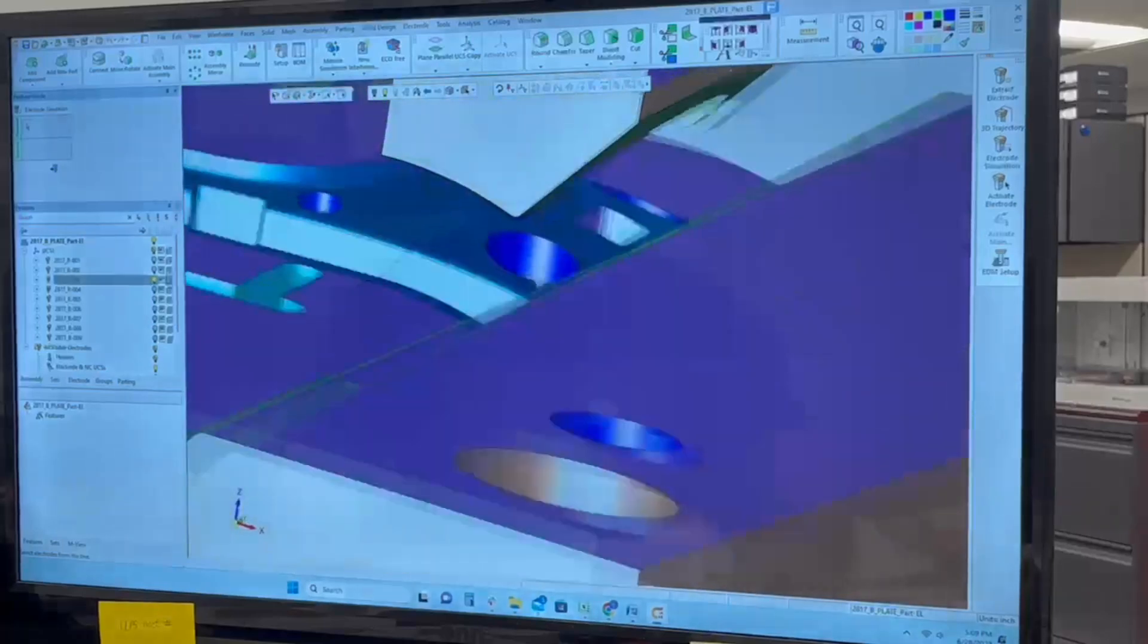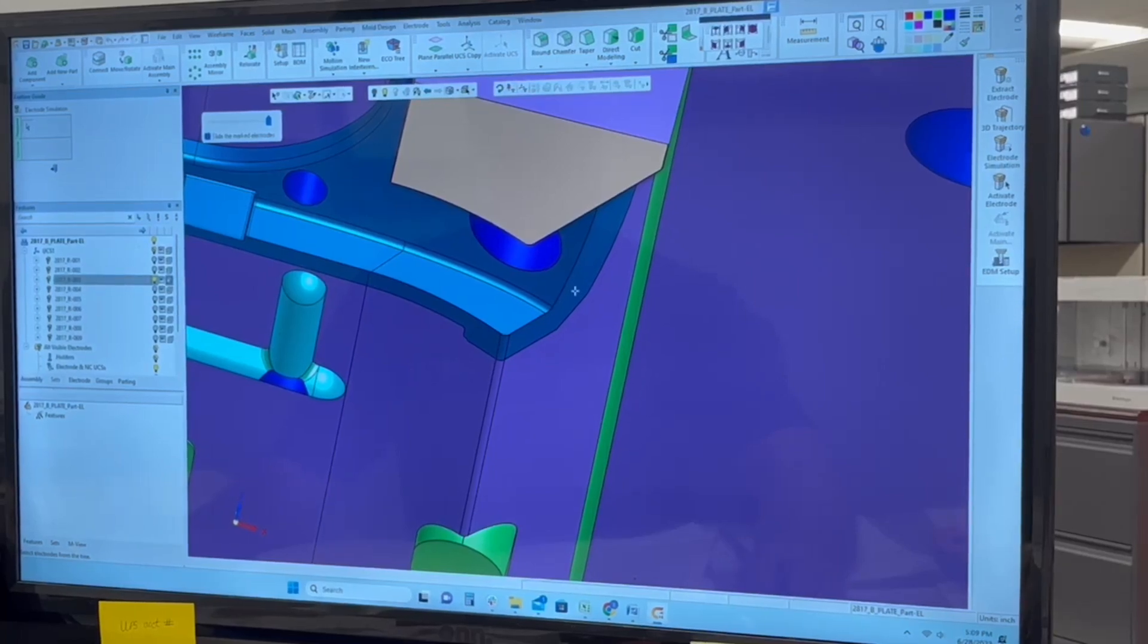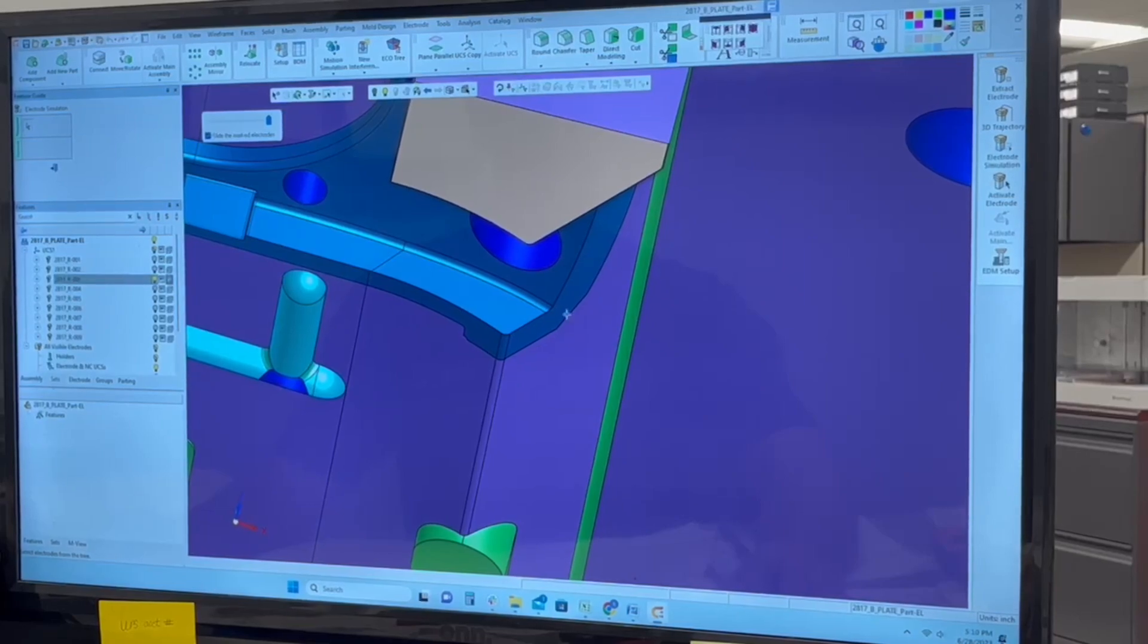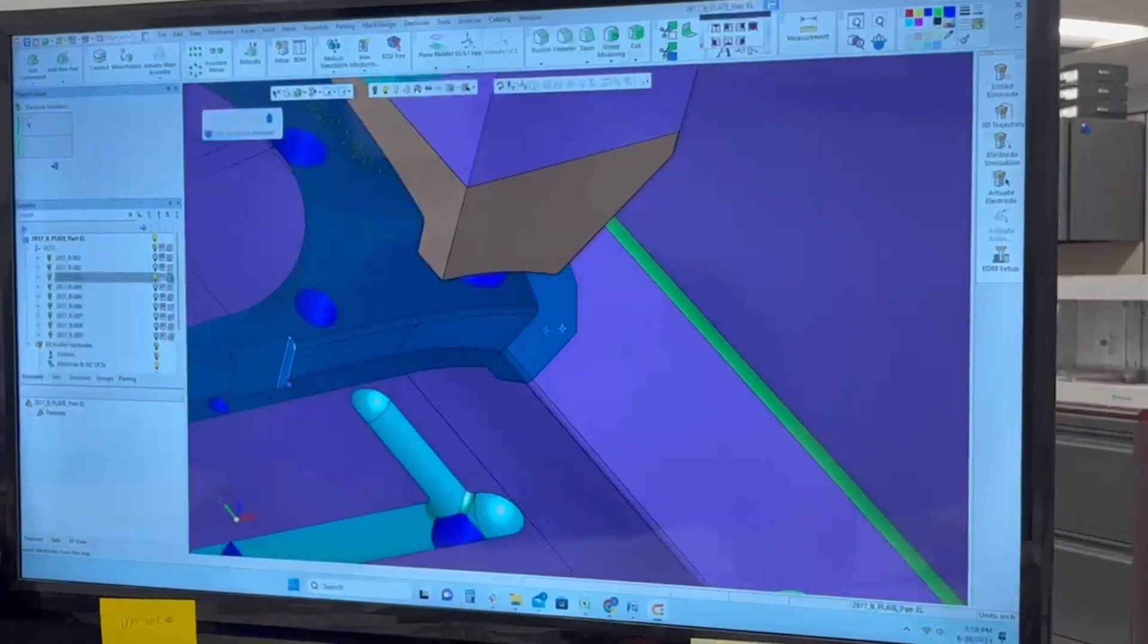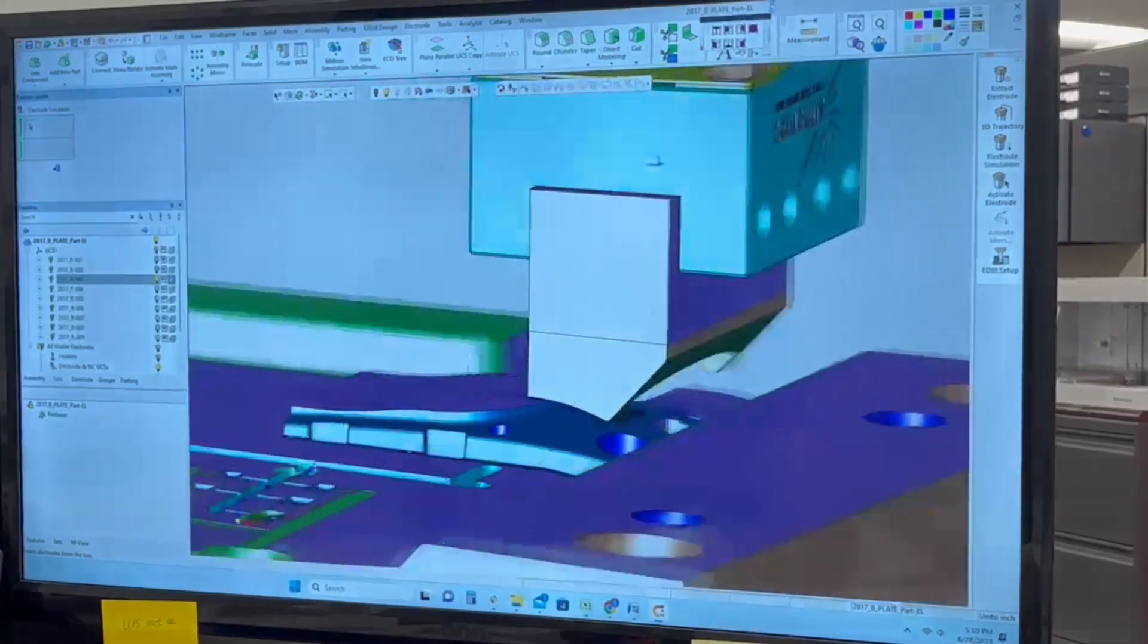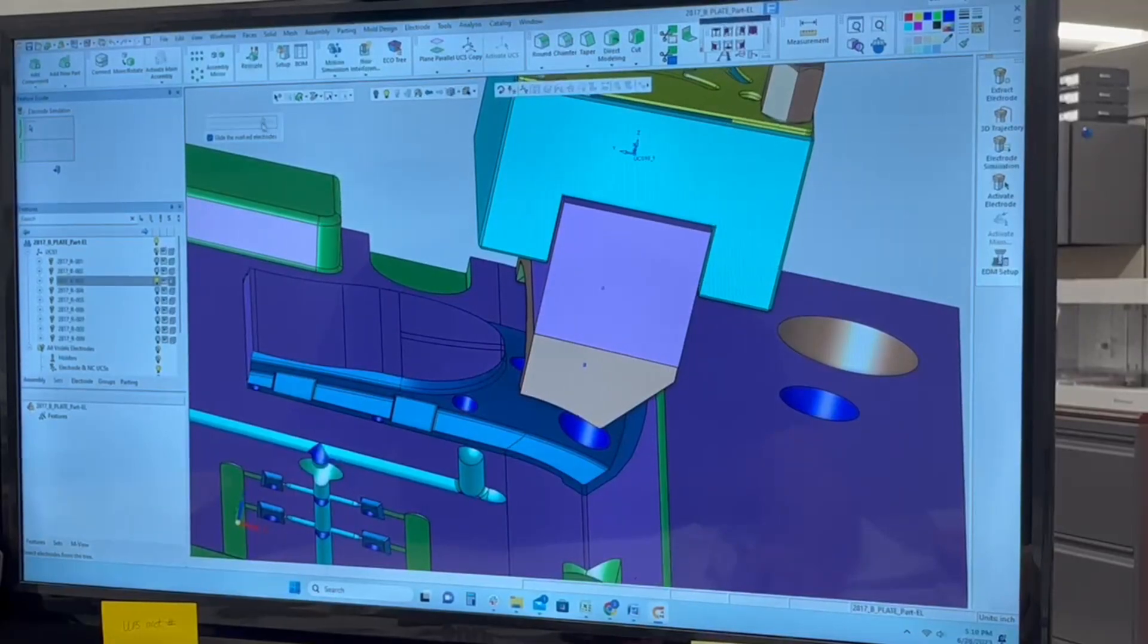And the whole idea is to be able to EDM this sharp edge in here as sharp as we can. And typically with EDM, you don't get smaller than one thou of a radius down in the corner. You can get down as close to, we've done like seven to eight tenths of a radius down there for anything that is sharp in the EDM process. So this is what we're trying to do.